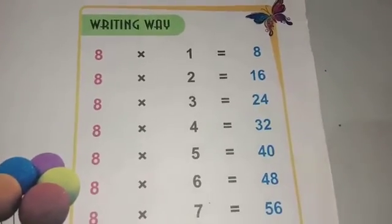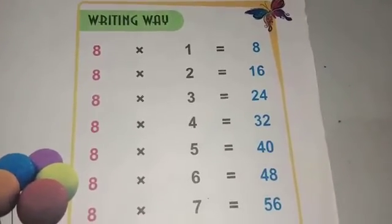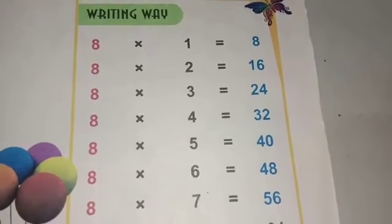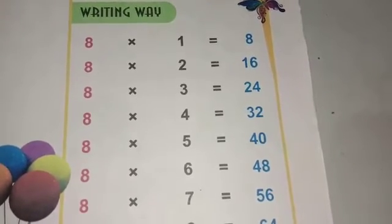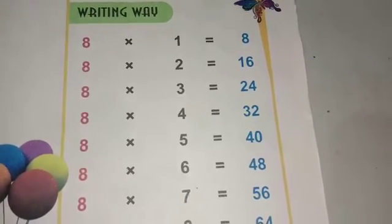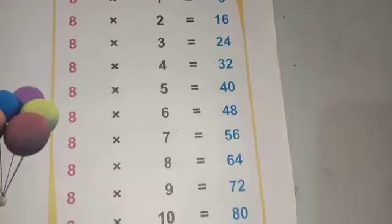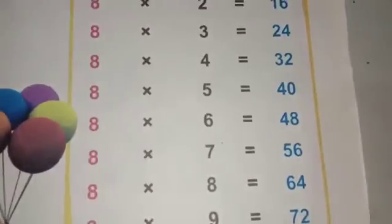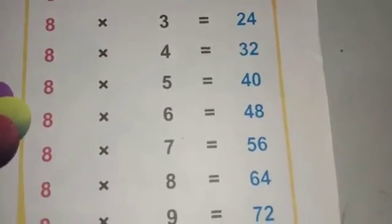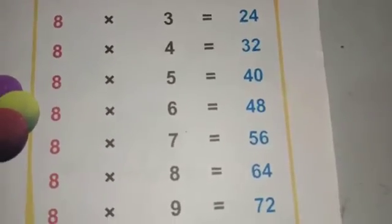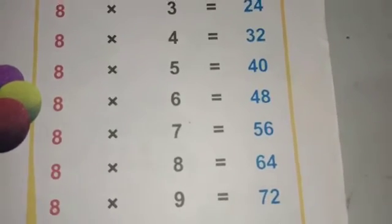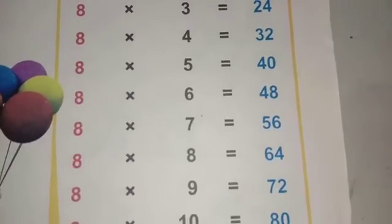8 1s are 8, 8 2s are 16, 8 3s are 24, 8 4s are 32, 8 5s are 40, 8 6s are 48, 8 7s are 56.